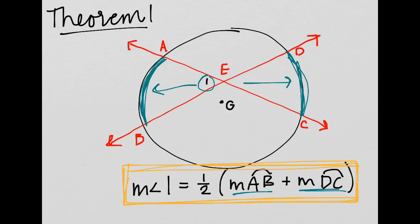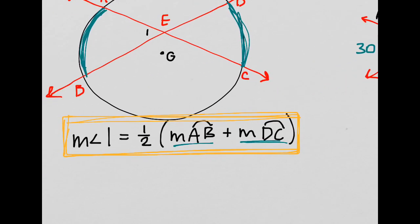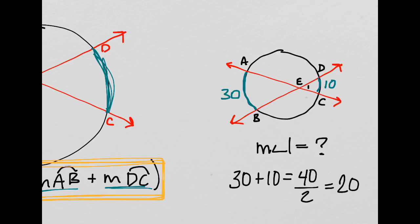It's not always going to be perfectly in the middle where they intersect. What we need to do is add these two arcs together, cut it in half, and then we have our angle measurement. You can see how this intersection is a little further to the side. So: 30 plus 10 gives me 40, divide that by 2 — the measure of angle 1 is 20 degrees. Make sure you have the degree symbol.